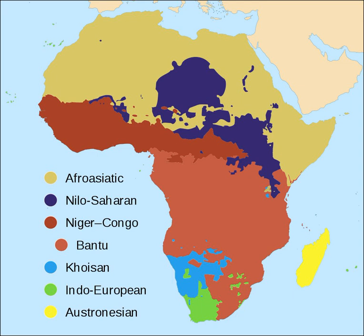The languages of Africa are divided into six major language families. Afroasiatic languages are spread throughout Western Asia, North Africa, the Horn of Africa and parts of the Sahel.